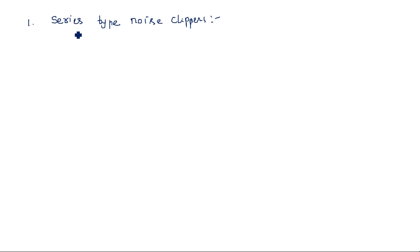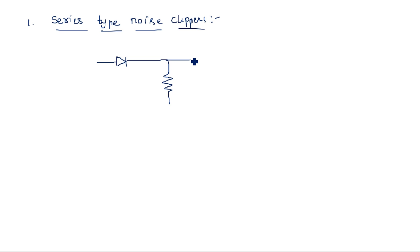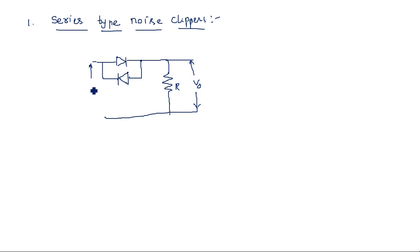Let us look at the first one: series type noise clippers. These are used to eliminate or cut the noise component present in the signal. The diode here is connected in series with the output voltage. But instead of using a single diode like in previous cases, we need to use two diodes — one diode conducts during the positive peak and another conducts during the negative peak. We consider practical diodes, not ideal, because we need to eliminate the unwanted voltage with amplitude V-gamma.